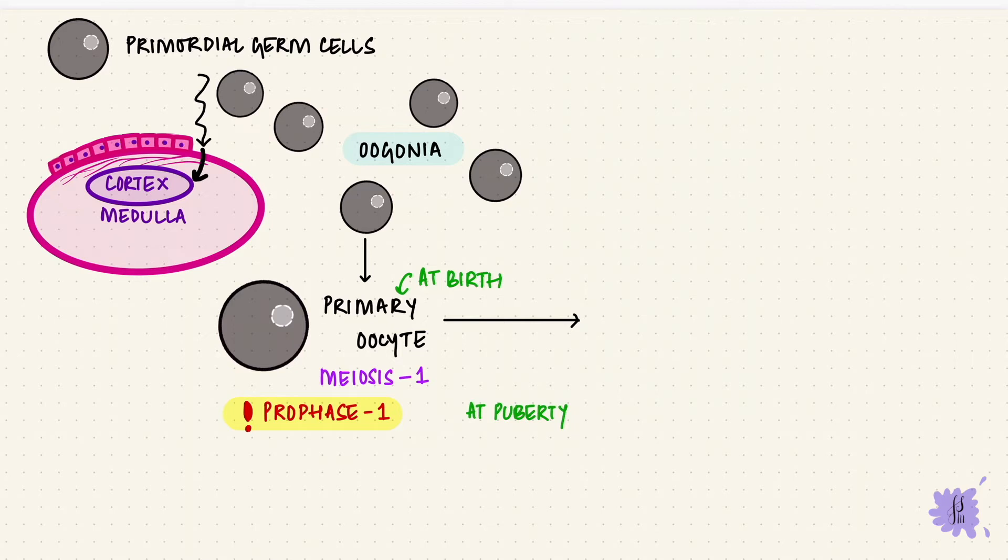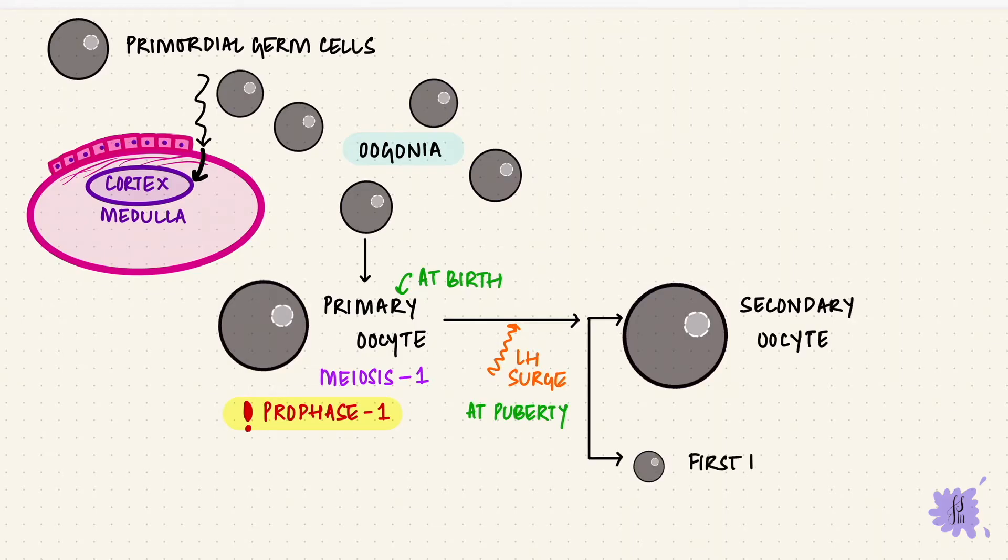At puberty, just before ovulation, there's a surge of the luteinizing hormone that pushes one primary oocyte to complete the first meiotic division and become a secondary oocyte. The other cell is the first polar body. The secondary oocyte enters the second meiotic division, and it gets stuck in metaphase until fertilization. Only if fertilization happens, can it go further. This is the oocyte that gets released during ovulation to enter the fallopian tube.